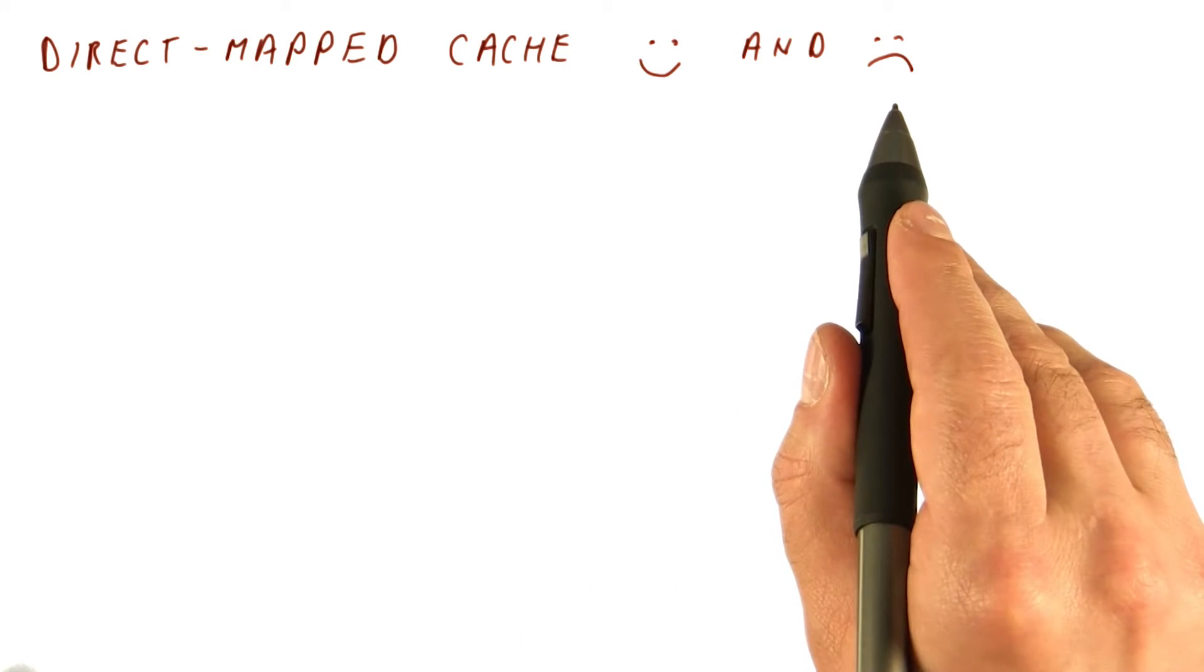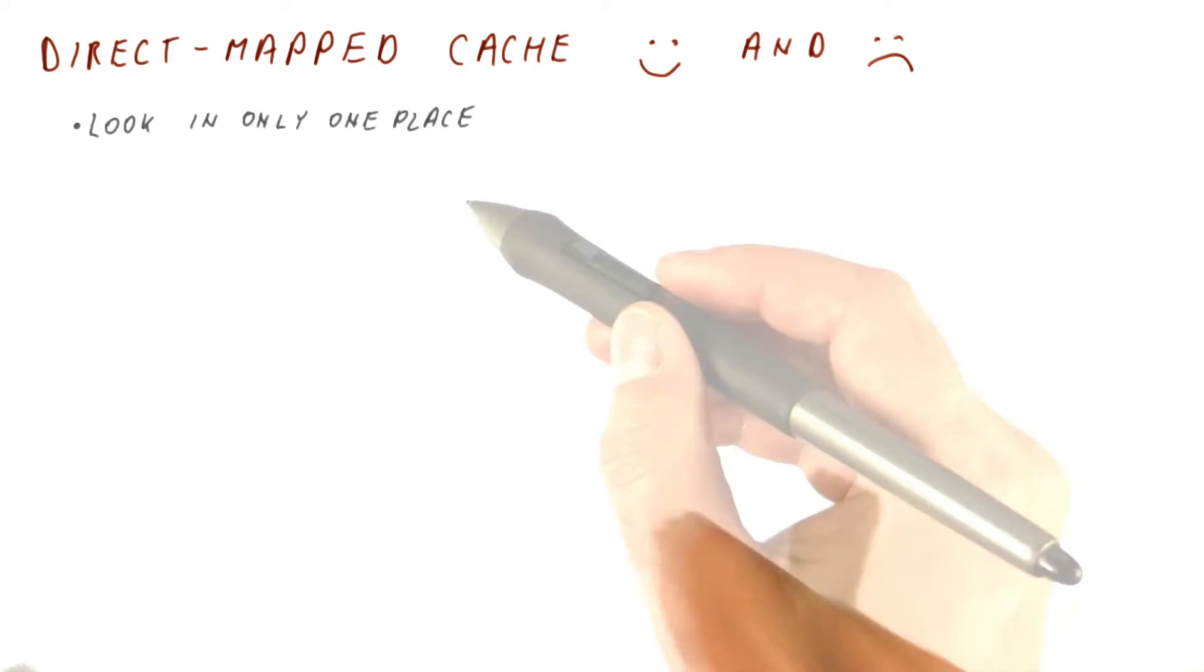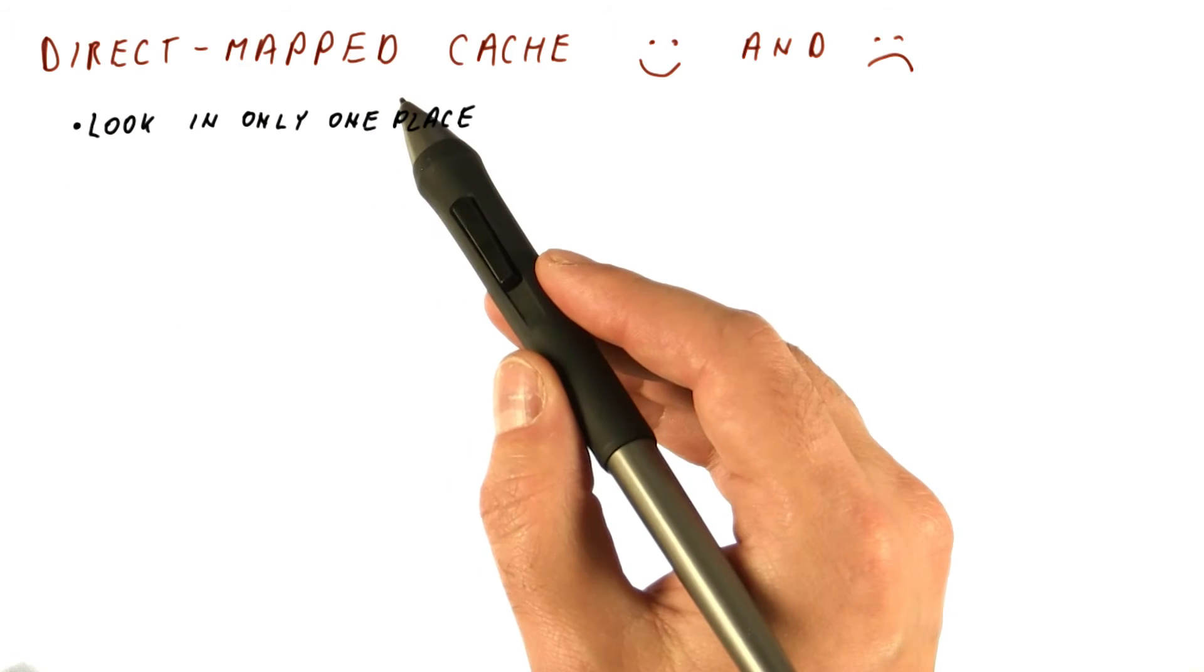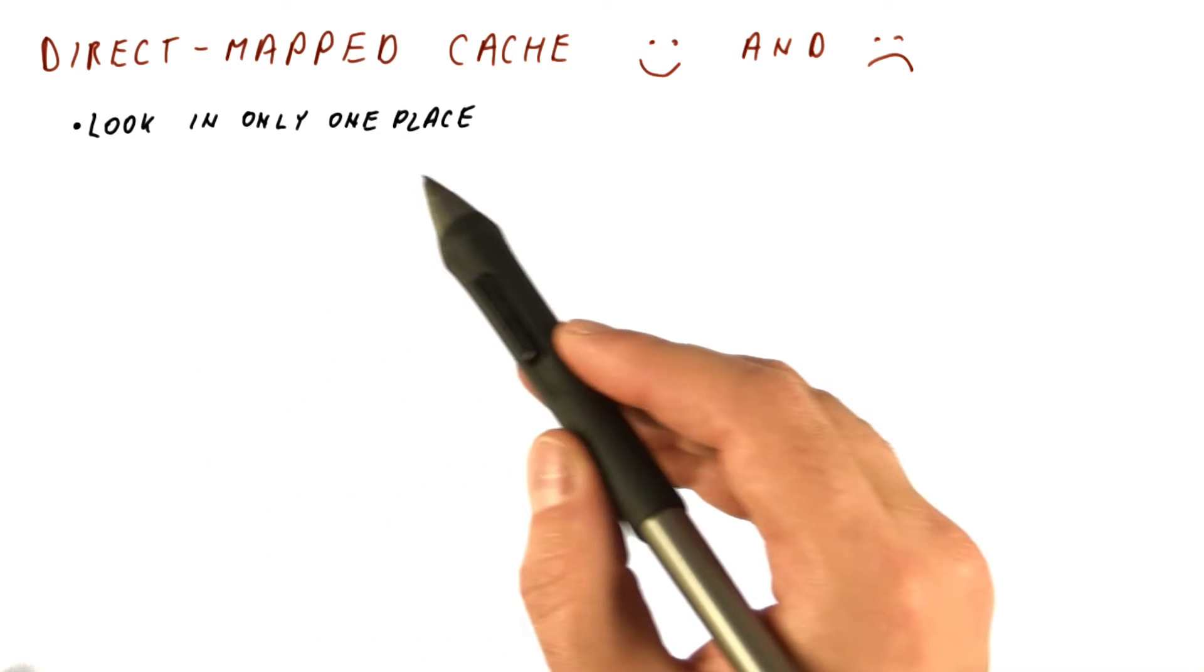So let's look at the upsides and downsides of direct-mapped caches. When we access the direct-mapped cache, we need to look in only one place.